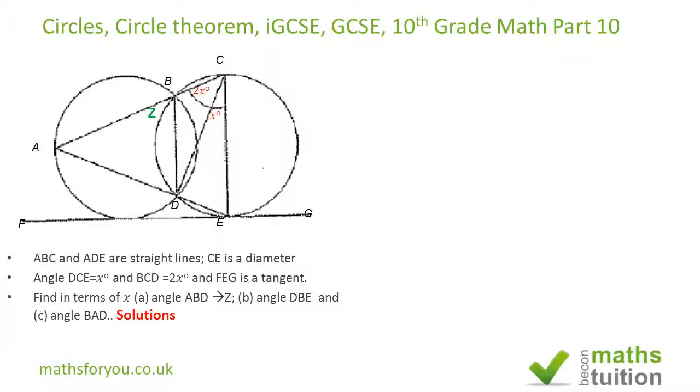Okay, now for the first one. That's the diameter, and therefore the diameter subtends angles of 90 degrees at the circumference, so that angle there should be 90 degrees. Now if that's 90 degrees and angles in the triangle add to 180 degrees, this angle has got to be 90 minus x degrees.